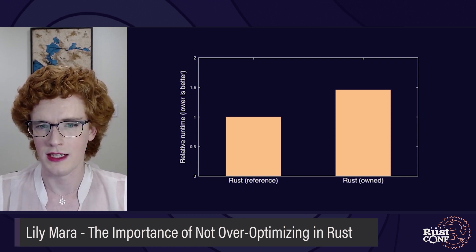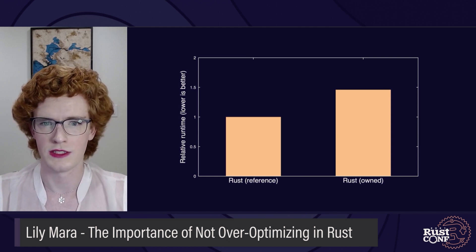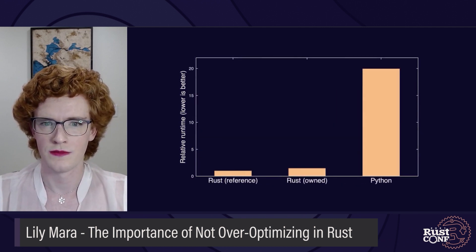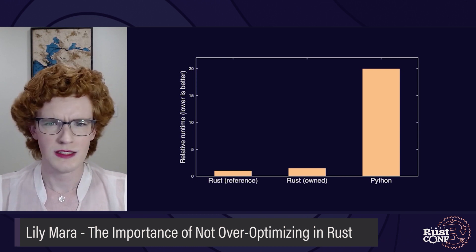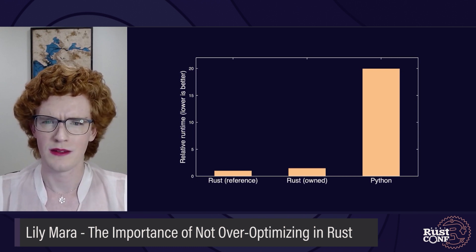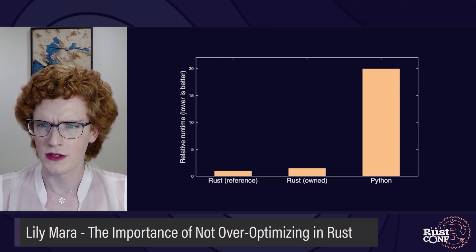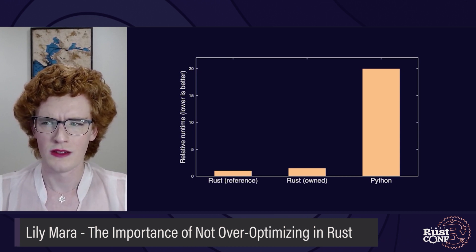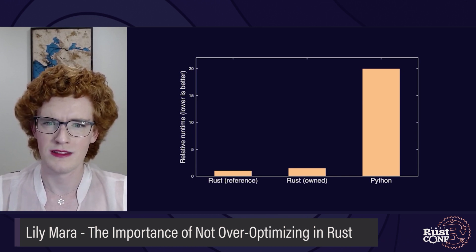Out of curiosity, Gene also benchmarks the original Python code against both Rust versions. After seeing these benchmarking results, Gene is a bit confused. They just wanted to write something that was faster than Python, after all. Their original slow version is nearly 20 times faster than the Python code, so why did they have to spend all that time learning these new topics?